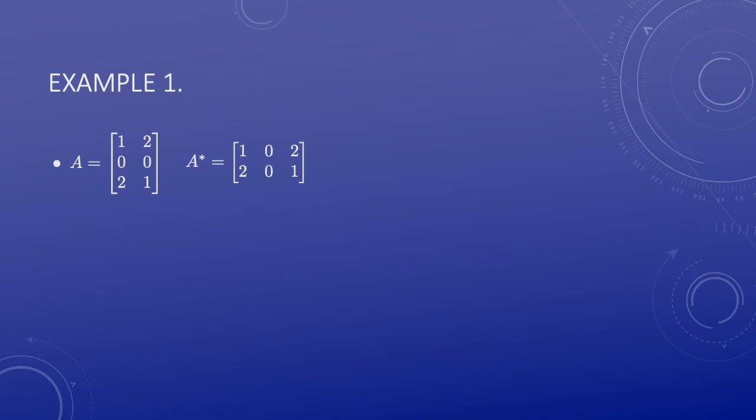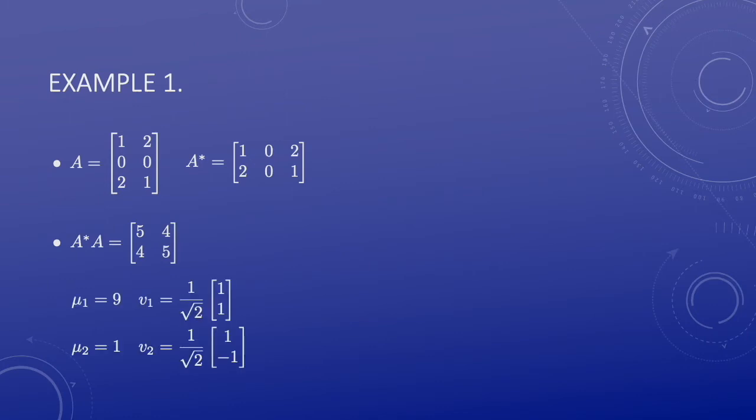In this first example, the matrix A is 3 by 2, and the adjoint is 2 by 3. This gives A star A as a 2 by 2 matrix. Notice that the sum of the columns is 9, 9, and the difference is 1, minus 1. This gives the eigenvalues and eigenvectors. The eigenvectors are normalized. Define the singular values of A: lambda 1 equals 3, lambda 2 equals 1.